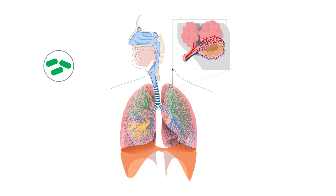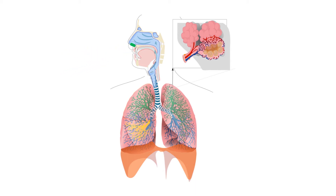Air droplets containing bacteria enter the body through the nasal passage, crossing the trachea, and they reach the alveoli.